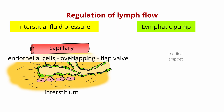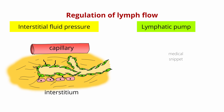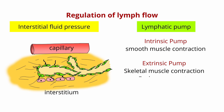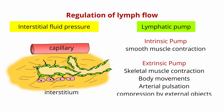Once the excess fluid is inside the lymphatic system, the flow depends on the lymphatic pump. The lymphatic pump can be divided into intrinsic and extrinsic. The intrinsic pump is due to contraction of the lymphatic vessels by its smooth muscle fibers, which aids the forward flow of lymph. Backflow of lymph in lymphatic vessels is prevented by the presence of many valves. The extrinsic pump is due to contraction of surrounding skeletal muscle, movements of parts of the body, pulsation of adjacent arteries, and compression of tissues by external objects.